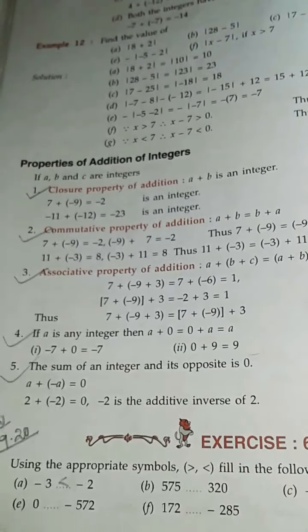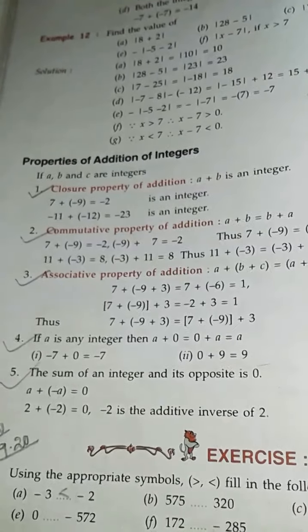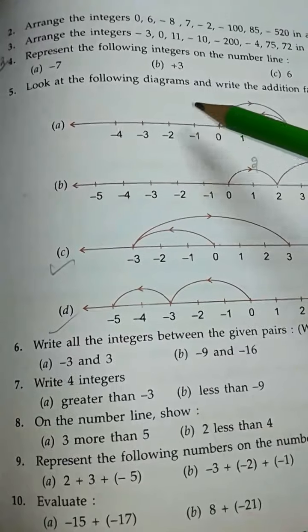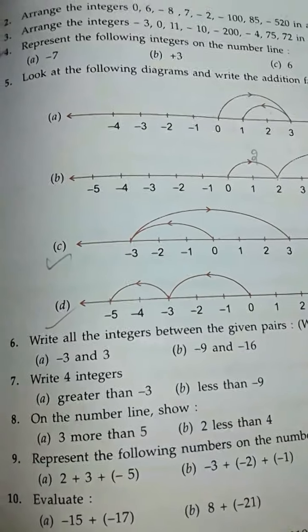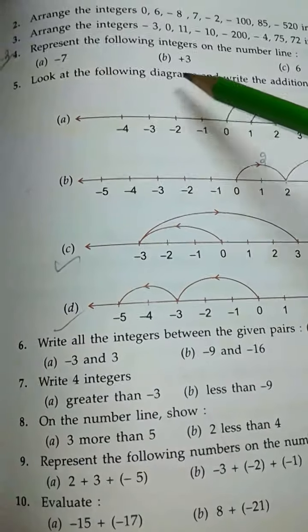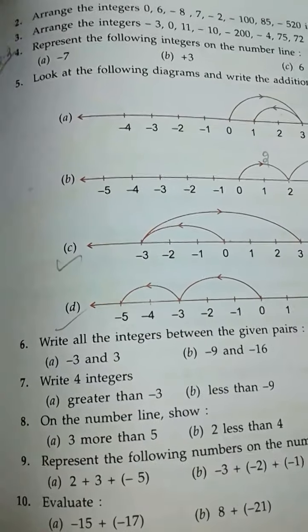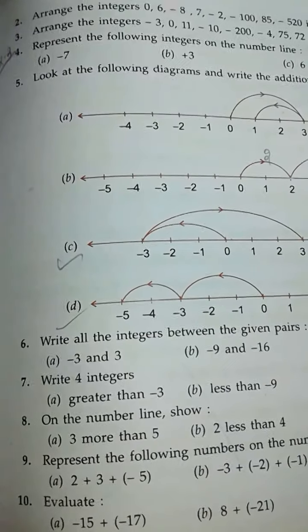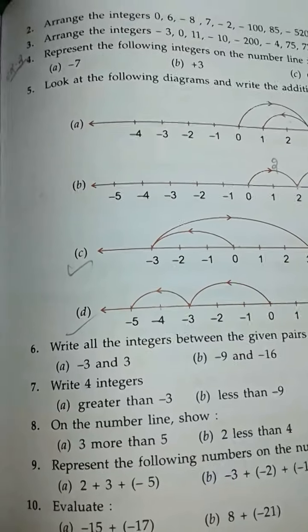Like this, you complete other numbers. Question 2: arrange the integers in ascending order, and question 3 is arrange the integers in descending order. So children, here you follow the number line, then you arrange the integers.